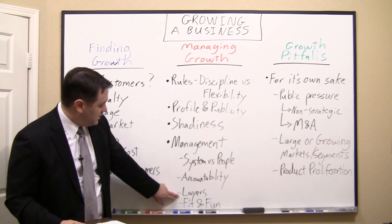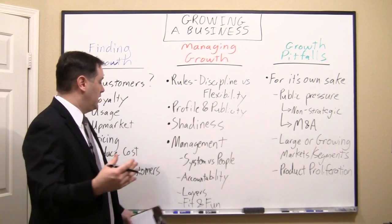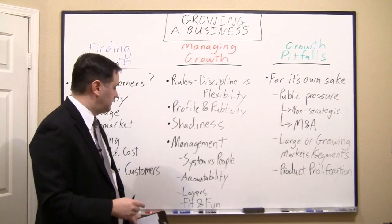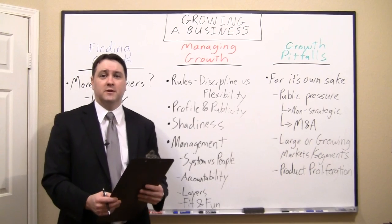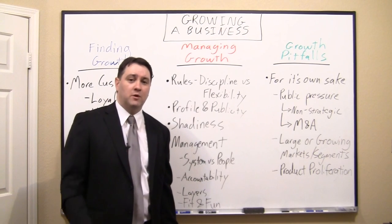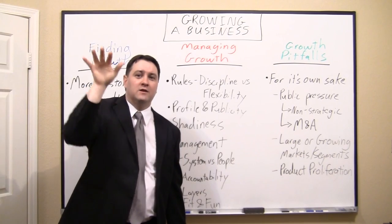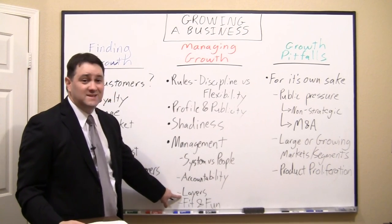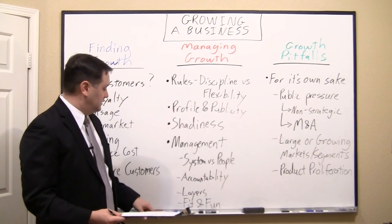I've touched on accountability. You also get layers of management — a counterintuitive point, because we think getting larger brings economies of scale and lower cost per unit. That's true for production, but the opposite is true for management. One person can effectively manage five people closely. A five-person organization needs one manager. A 25-person organization needs five managers for those five people, and another layer to manage the five managers. So larger actually becomes a diseconomy of scale for management — more expensive per unit.